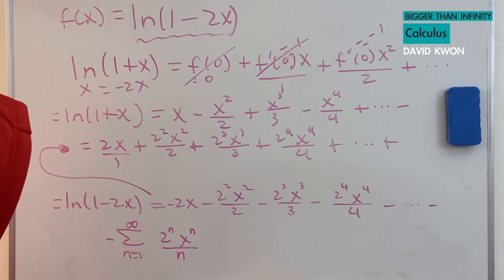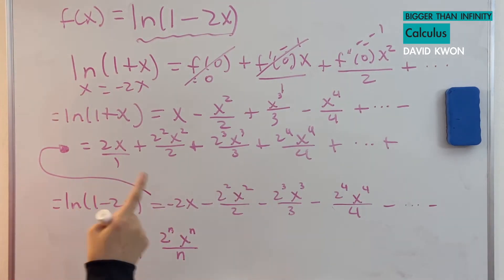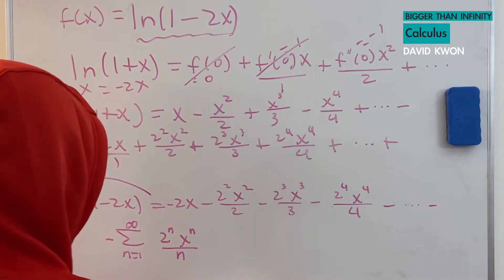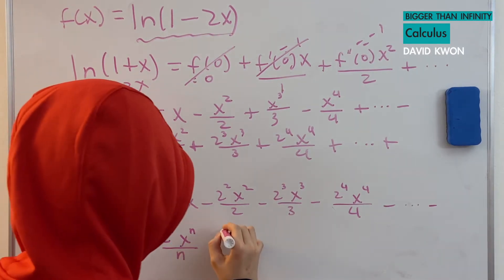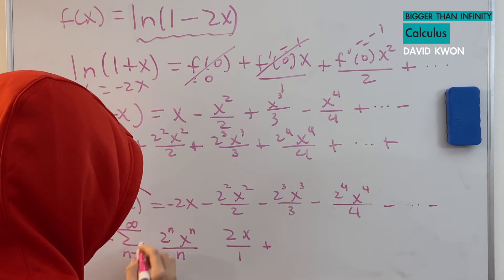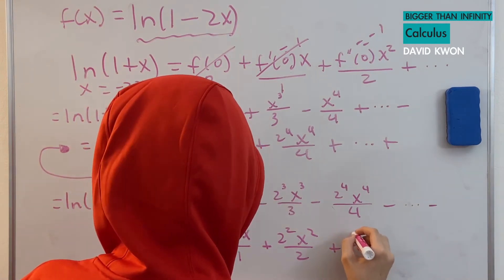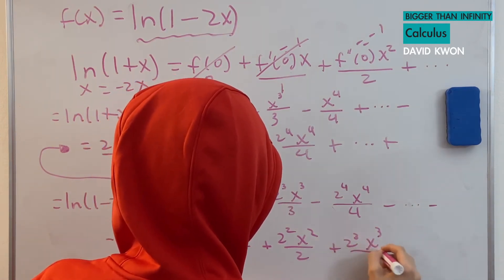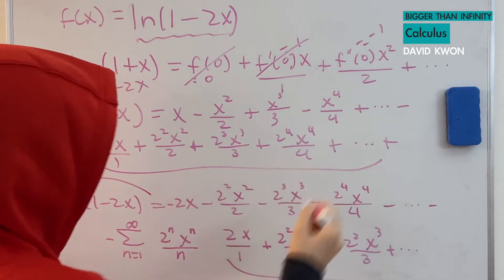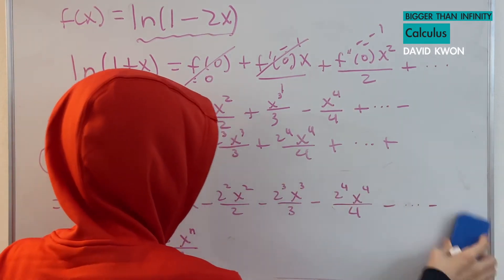Let's check to see if this is right by substituting n = 1, 2, 3. When n = 1, I get 2 times x over 1. When n = 2, I get 2 squared times x squared over 2. When n = 3, I get 2 cubed times x cubed over 3. These match our series, so the summation formula is correct.